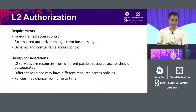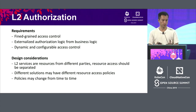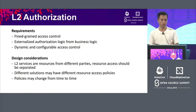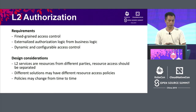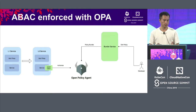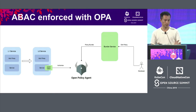In L2, we have services from different partners and resources from different partners, so we want more fine-grained access control. For instance, company A cannot access company B's resources. That's where Open Policy Agent comes in. We have a library called OPA Client which all L2 services are integrated with. This client will send an authorization request to Open Policy Agent.